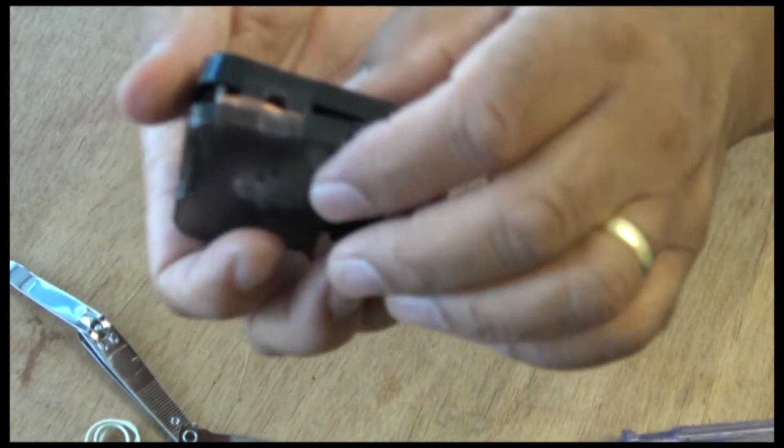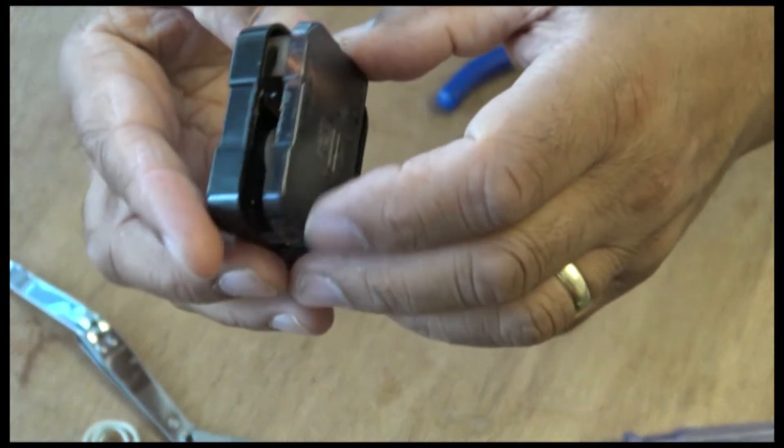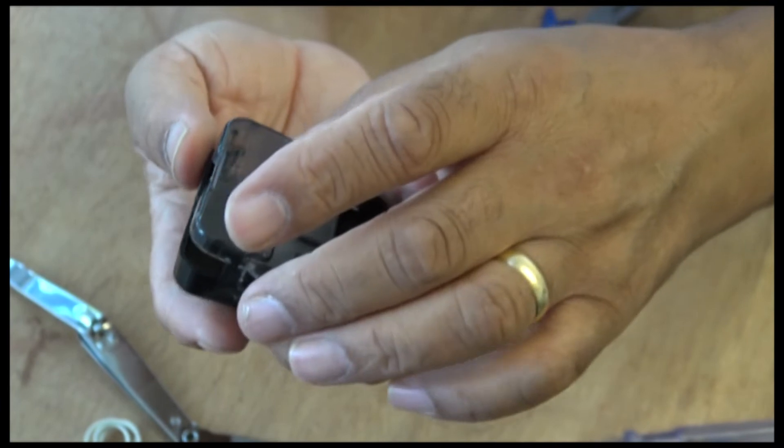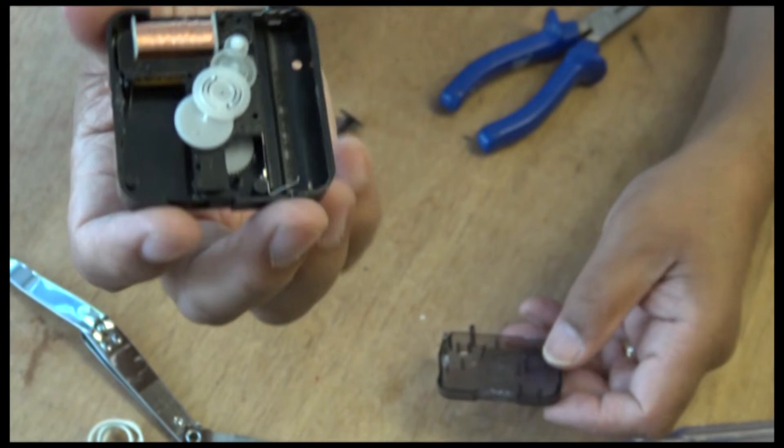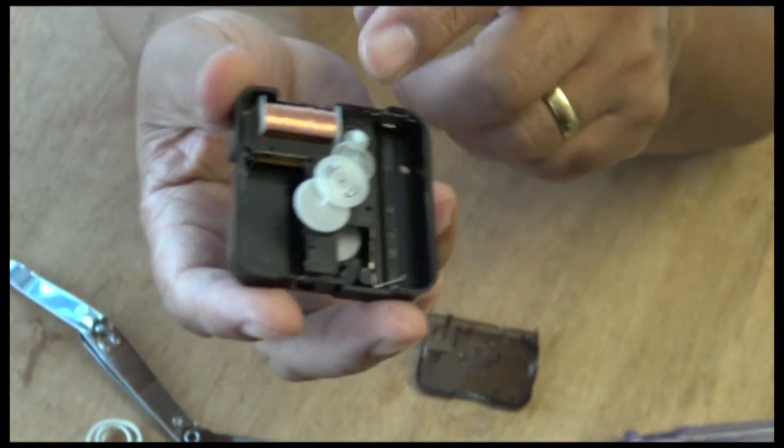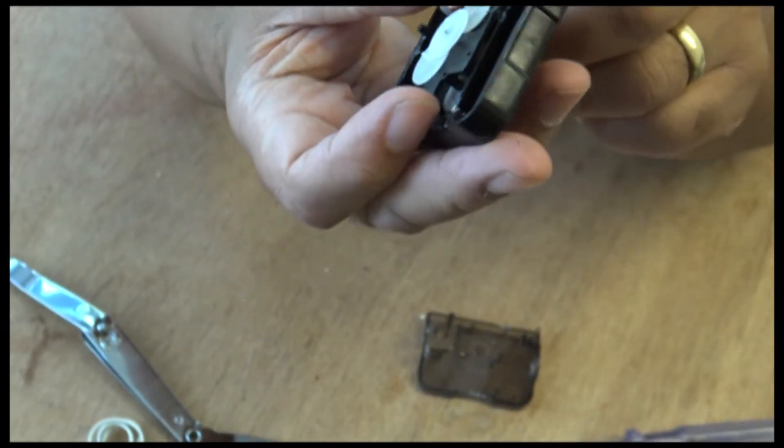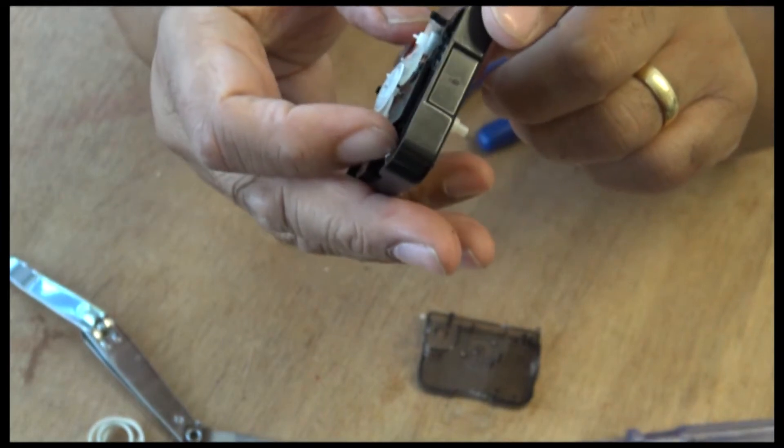And you can see that comes off and it just lifts off like that. So these are obviously the gears. There's a coil there. I am interested in this coil, hopefully it's still working.